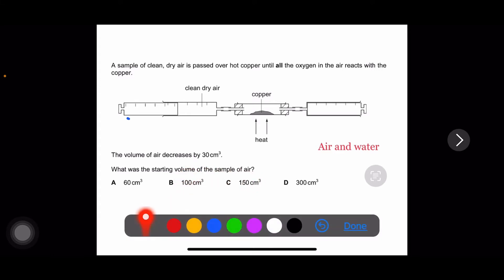Here they are asking that they have entered the clean dry air sample in this gas syringe, and the copper is heated here. Why? Because copper is less reactive, so copper will react with oxygen in this glass tube.